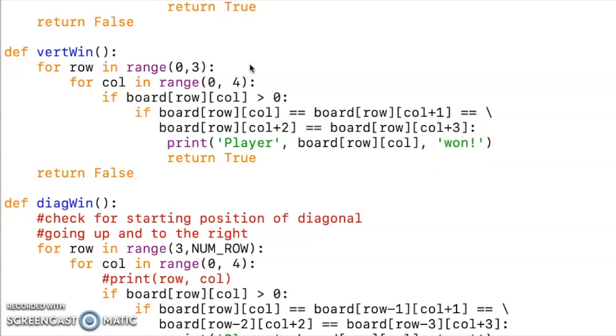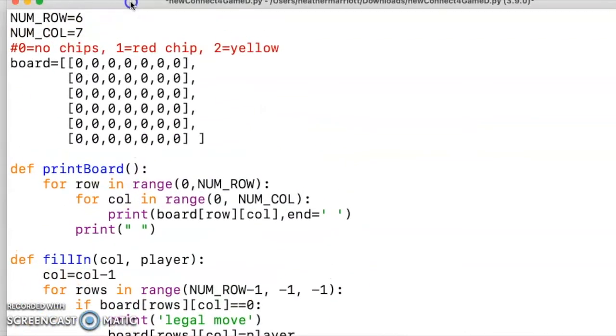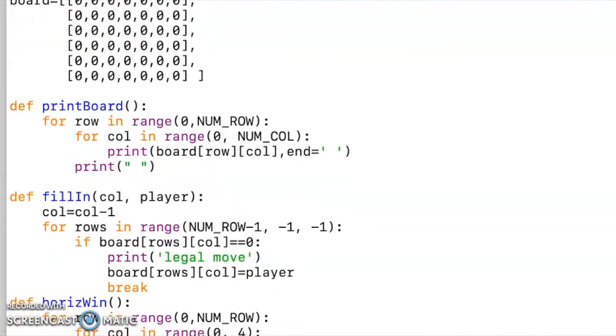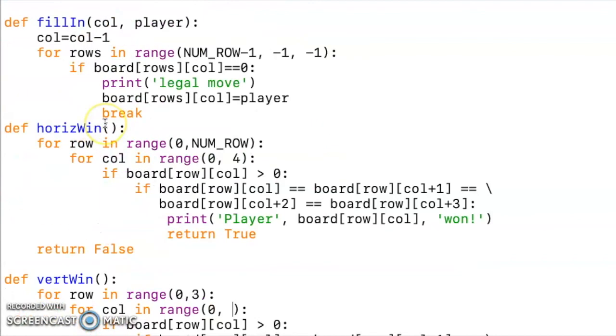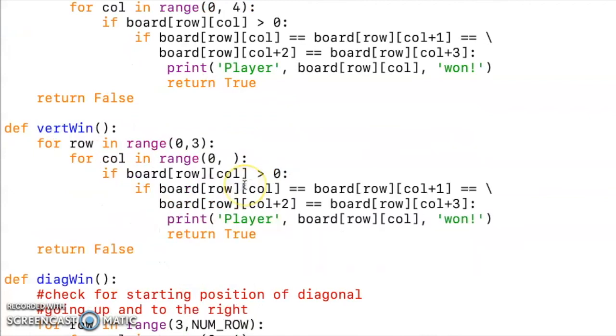any of these columns could be a beginning of a four in a row vertically. So I have put at the beginning of this code variable number of columns. So I'm going to use that in my loop, just like I use number of rows in some of the other loops. So number of columns.